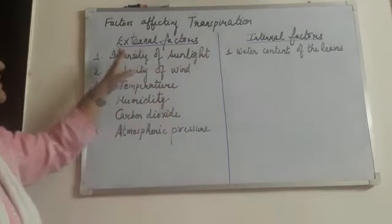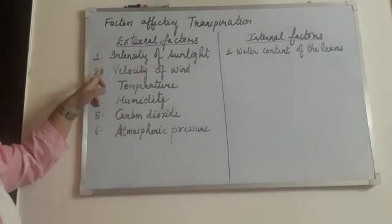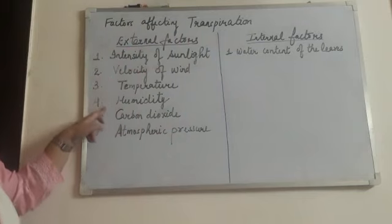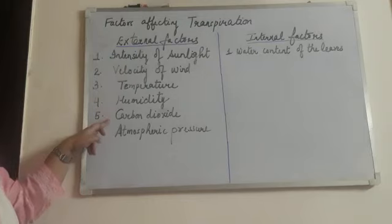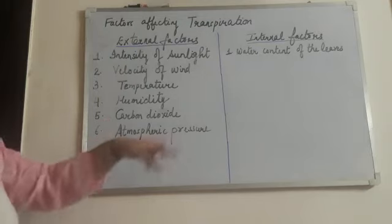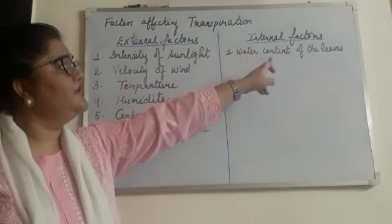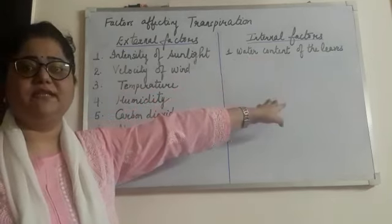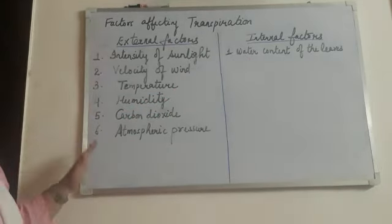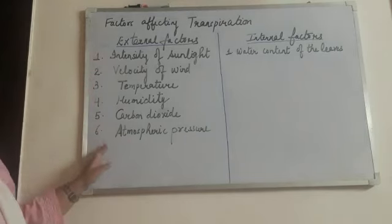The external factors are: intensity of sunlight, velocity of wind, temperature, humidity, carbon dioxide, and atmospheric pressure. The internal factor we will talk about is water content of the leaves. So let us start with the external factors first. I will be describing all the factors one by one.